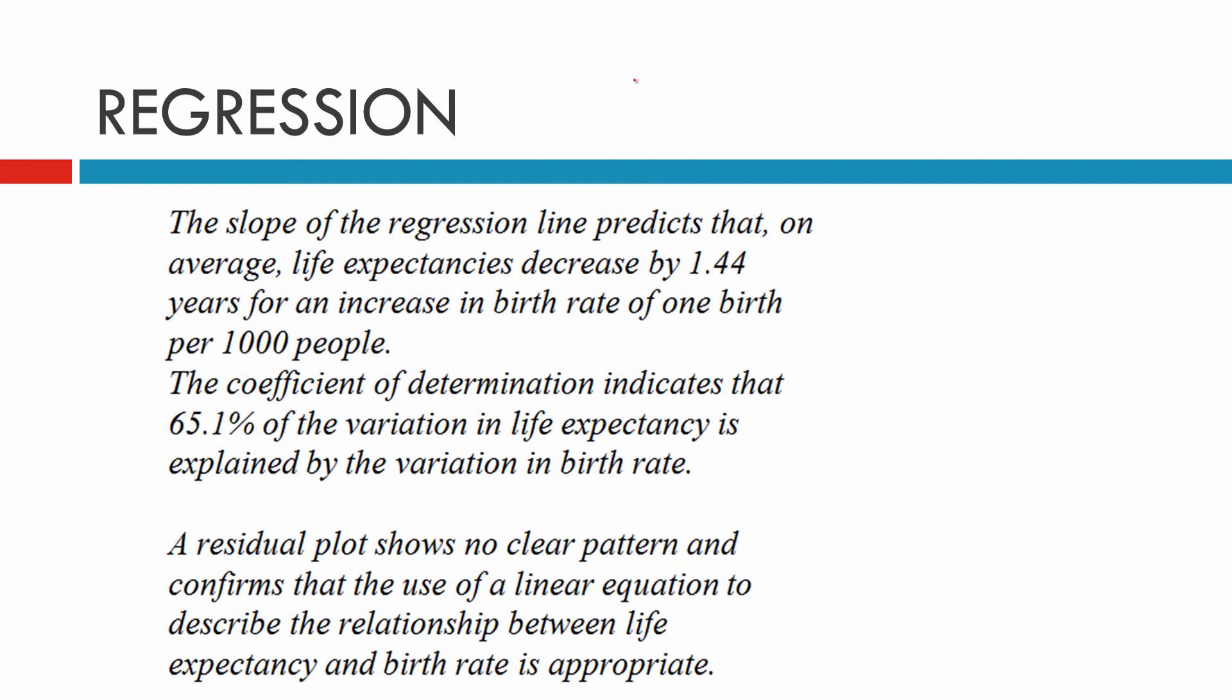Continuing with our report, the slope of the regression line predicts that on average, life expectancies decrease by 1.44 years for an increasing birth rate of one birth per thousand people.